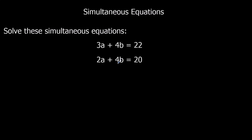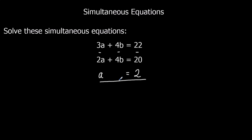If we look at this example we can see the b's here are the same — there's 4b in both of the equations. That means we can eliminate the b's, we can get rid of the b's. We're going to do that by taking away one equation from the other. So 4b take away 4b is zero. 3a take away 2a is 1a, 4b take away 4b is nothing.